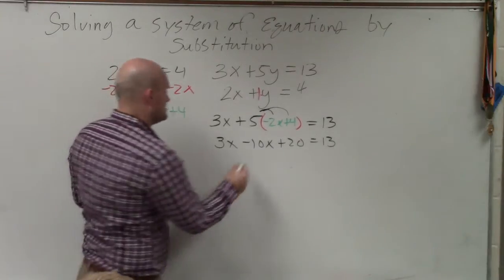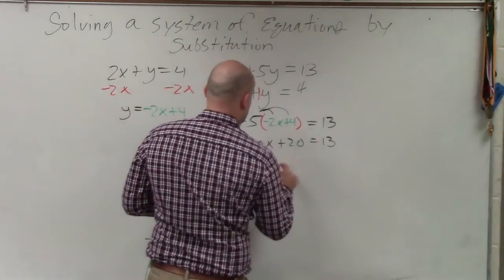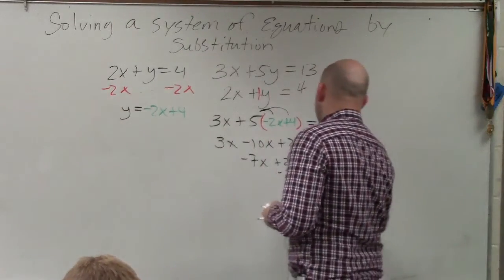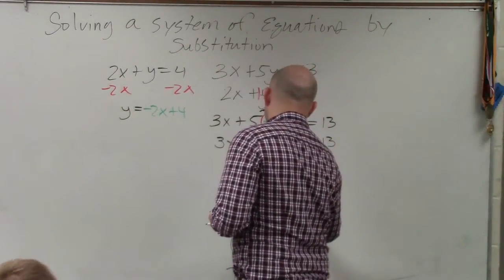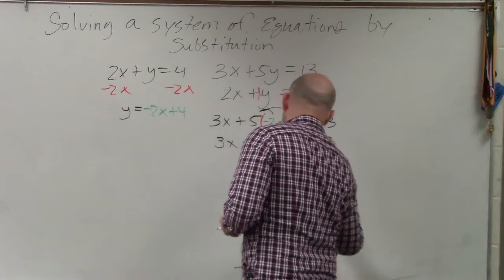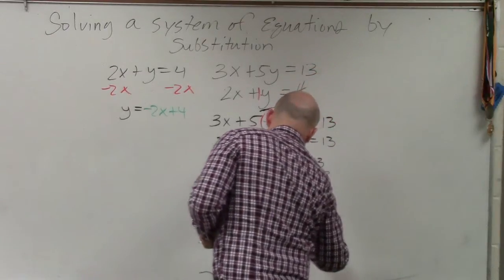3x minus 10x is going to be negative 7x plus 20 equals 13. Subtract 20 from both sides. Negative 7x equals negative 7. Divide by negative 7 on both sides. x equals negative 1.